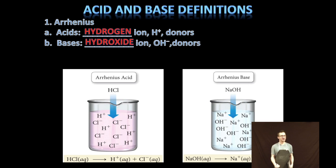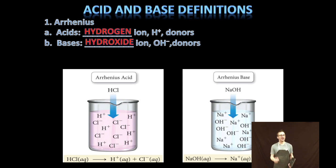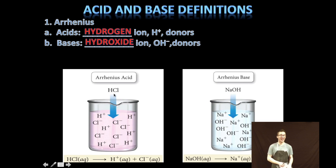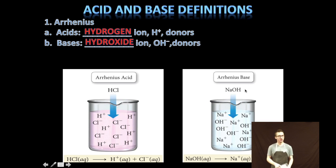The first way we're going to define acids and bases is using the Arrhenius definition. This system defines an acid as something that increases the hydrogen ion concentration in solution, or is known as a hydrogen ion donor. The Arrhenius definition of a base is something that increases the hydroxide ion concentration, or donates hydroxide ions. Examples are HCl as an Arrhenius acid and sodium hydroxide as an Arrhenius base.